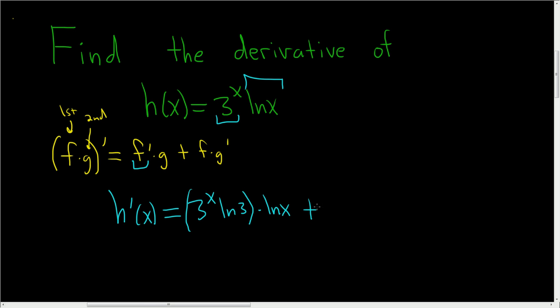plus the first factor, 3 to the x, times the derivative of the second factor. The derivative of the natural log of x is just 1 over x.